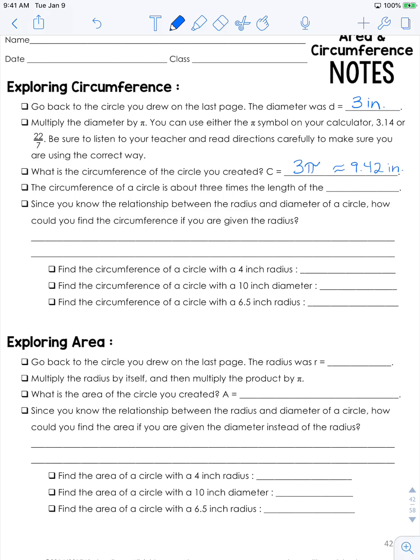And I have the wavy equal sign there because since pi is not a definitive number, we cannot say that the answer is simply 9.42. It is approximately.